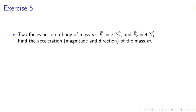Exercise 5. Two forces act on a body of mass M. F1 equals 3 Newton i hat and F2 equals 4 Newton j hat. Find the acceleration, magnitude and direction of the mass M.